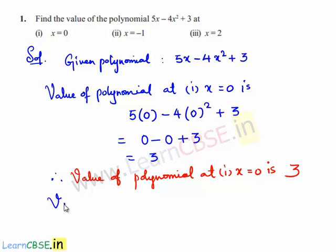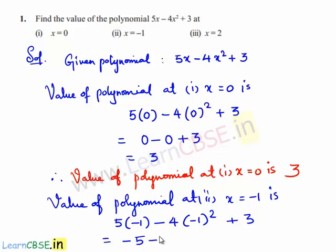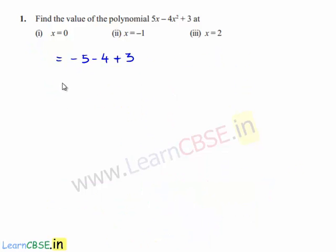Next, the value of the polynomial at x equals minus 1 is 5 times minus 1 minus 4 times minus 1 squared plus 3, which equals minus 5 minus 4 plus 3. This equals minus 9 plus 3, which equals minus 6. Therefore, the value of the polynomial at x equals minus 1 is minus 6.